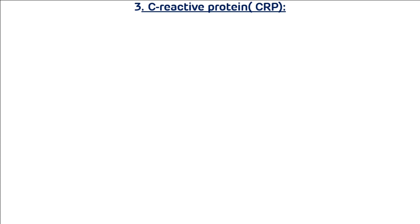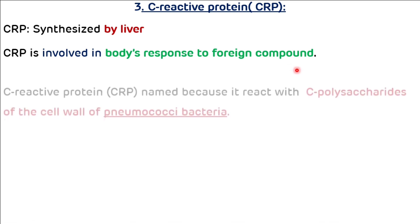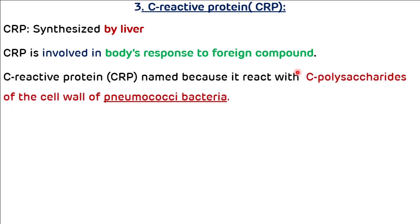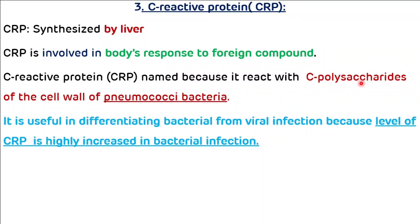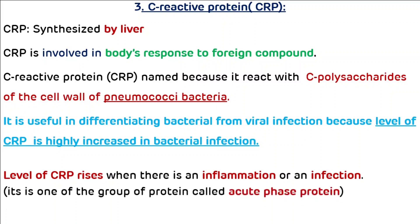The third beta globulin is C-reactive protein (CRP), an acute phase protein synthesized by the liver. It is involved in the body's response to foreign compounds. CRP is named because it reacts with the C-polysaccharides of the cell wall of pneumococci bacteria. It is useful in differentiating bacterial from viral infection because CRP levels are highly increased in bacterial infection compared to viral infection. The level of CRP rises with inflammation or infection.